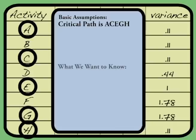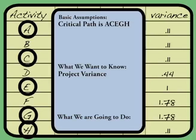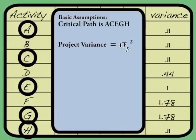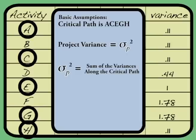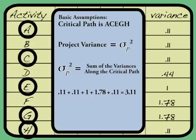For activity A: pessimistic time of three minus optimistic time of one, divided by six — so two divided by six, squared — equals 0.11. For activity B: pessimistic time of four minus two, so two divided by six, squared, gives us 0.11 again. We fill in our chart with the variances. We want to know what the project variance is — it is the sum of the variances along the critical path: 0.11 plus 0.11 plus 1 plus 1.78 plus 0.11 gives a total of 3.11. So our project variance is 3.11.